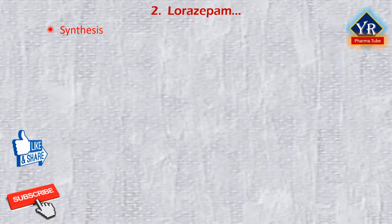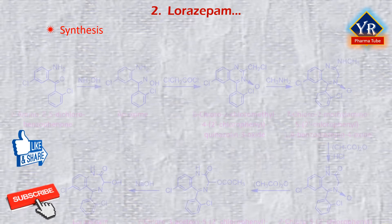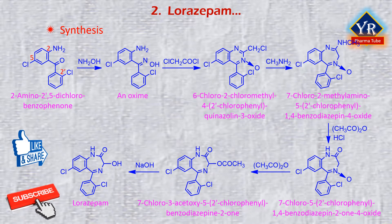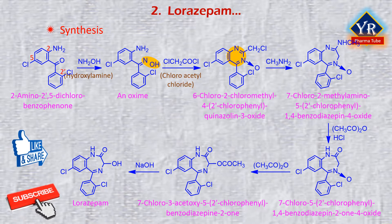Lorazepam is synthesized according to a scheme containing some of the same elements as the synthesis of chlordiazepoxide and oxazepam, starting from 2-amino-2,5-dichlorobenzophenone. Reacting this with hydroxylamine gives an oxime. The oxime reacts with chloroacetyl chloride and undergoes heterocyclization to give 6-chloro-2-chloromethyl-4-(2-chlorophenyl)-quinazoline-3-oxide, which upon reaction with methylamine leads to rearrangement and ring expansion forming the corresponding 1,4-benzodiazepine-4-oxide.